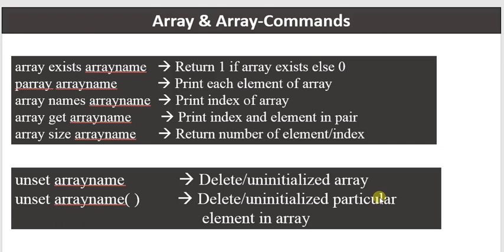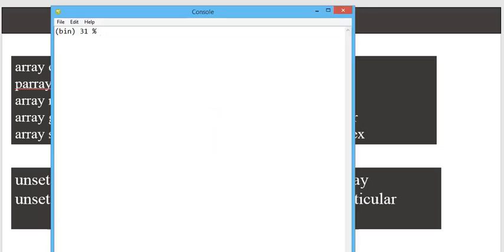Now let's see the array-based commands, similar to string or list-based commands. The very first is array exists — this command checks whether the array is available or not. If the array is available, it returns 1; otherwise it returns 0. Parray we have already seen — it prints each element of the array.